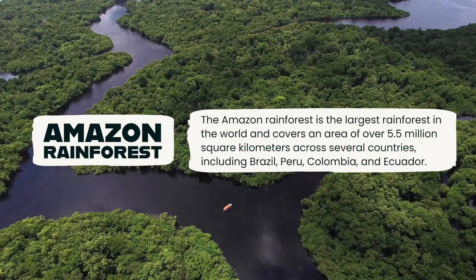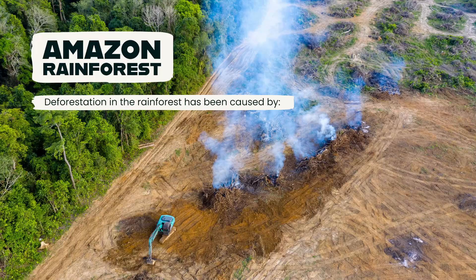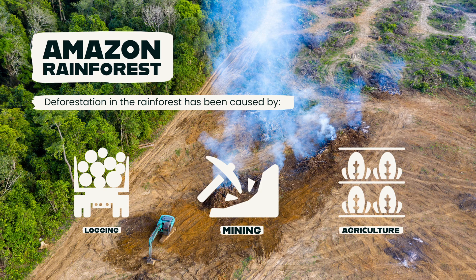One location that is an example of deforestation is the Amazon rainforest in South America. The Amazon rainforest is the largest rainforest in the world and covers an area of over 5.5 million square kilometers across several countries, including Brazil, Peru, Colombia, and Ecuador. Deforestation in the Amazon has been driven by a variety of factors, such as logging, mining, and the conversion of forest land for agricultural purposes — particularly for the production of soybeans, beef, and palm oil. The rapid expansion of these activities has resulted in the destruction of vast areas of the rainforest, often referred to as the lungs of the earth, because of its vital role in regulating the global climate.